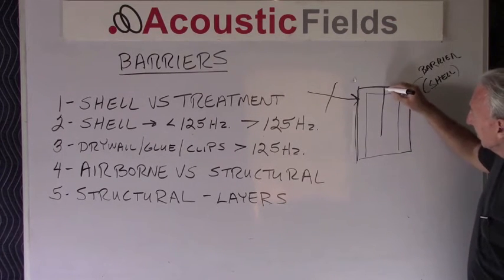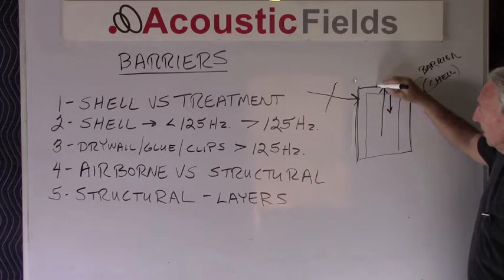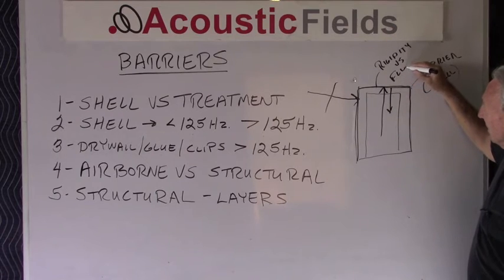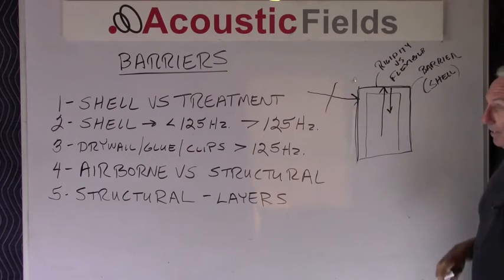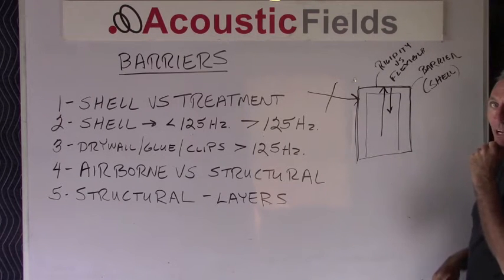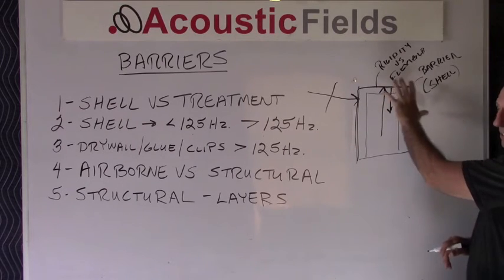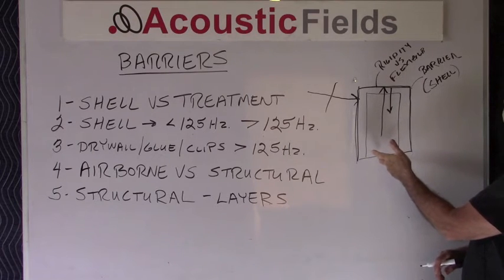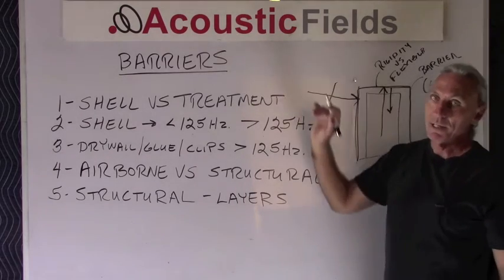Any noise generated in the room should be kept in the room. There's a ratio of rigidity versus flexibility that has to be maintained for good quality sound inside your room, but we'll get to that in another video. So we have the shell or the barrier — that's to keep extraneous noise out, and also any noise, sound, or music that we're generating within the room, keep it within the room. So we use barrier technology to do that.